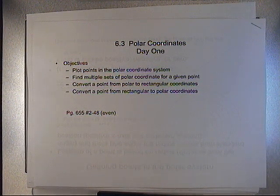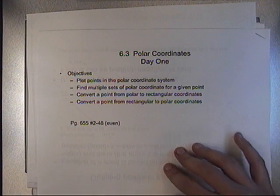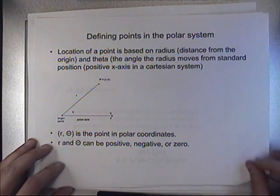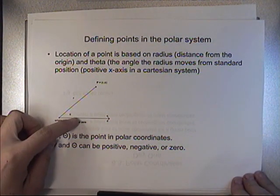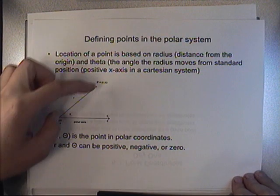Okay, this is 6.3, polar coordinates. Polar coordinates are basically how to identify a particular point on a plane, rather than using X's and Y's, talking about rotations of a radius.